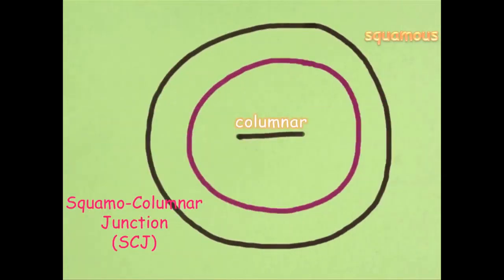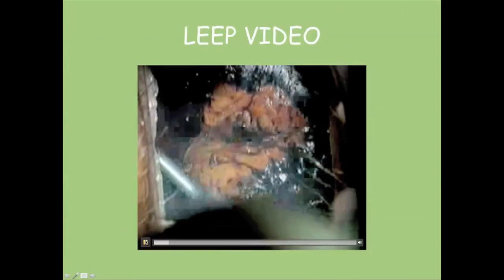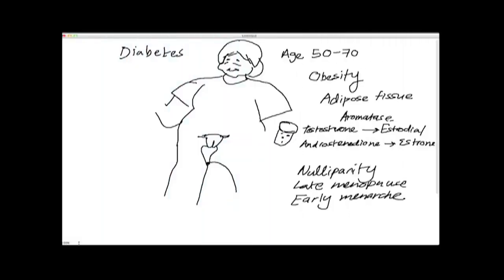Before menarche, the SCJ is located at or very close to the external os. As the woman ages, a LEEP electrode is used to excise the transformation zone. Our topic for the second video is endometrial hyperplasia. Hyperplasia results from proliferation of endometrial glands. This patient has had a mastectomy and she's taking tamoxifen, which as we know is a selective estrogen receptor modulator.